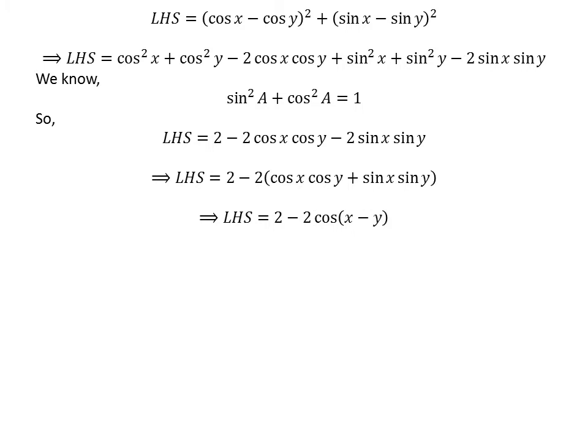We know that cosine of x minus y equals cosine x times cosine y plus sine x times sine y. Applying this identity and taking the common factor 2, the left hand side becomes 2 times (1 minus cosine of x minus y).